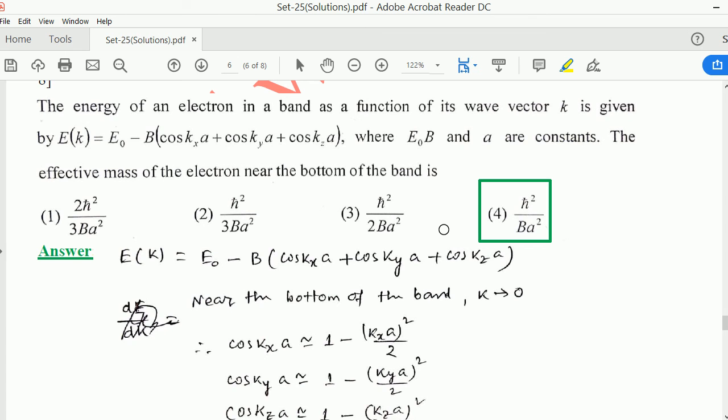The energy of an electron in a band as a function of its vector k is given by epsilon k equals epsilon naught minus B times (cos kx a plus cos ky a plus cos kz a), where epsilon naught, B, and A are constants. The effective mass of the electron near the bottom of the band is: